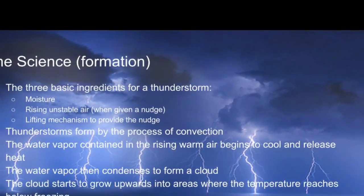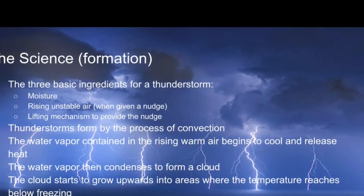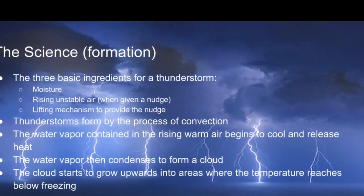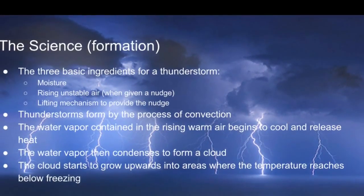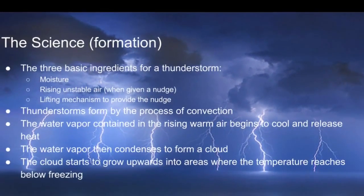Thunderstorms form by the process of convection. The water vapor then condenses to form a cloud. The cloud starts to grow upwards into areas where the temperature reaches below freezing.